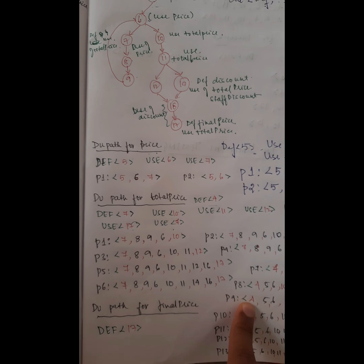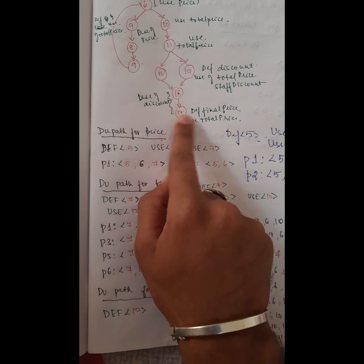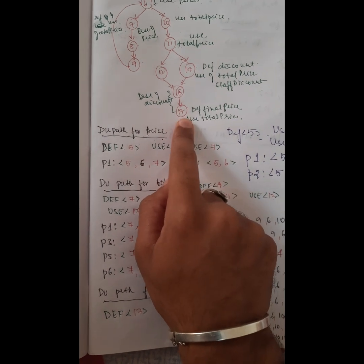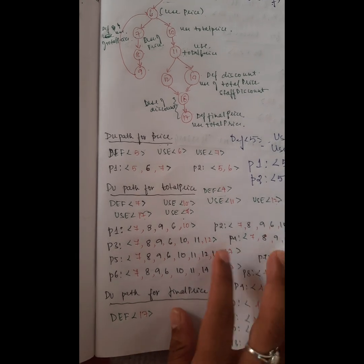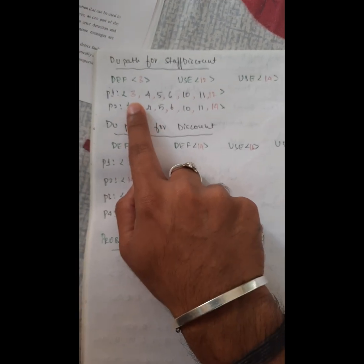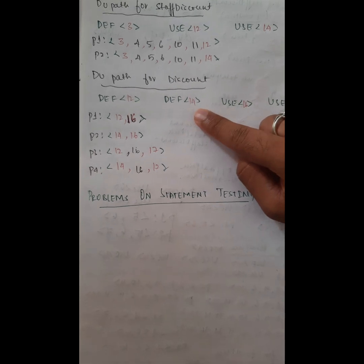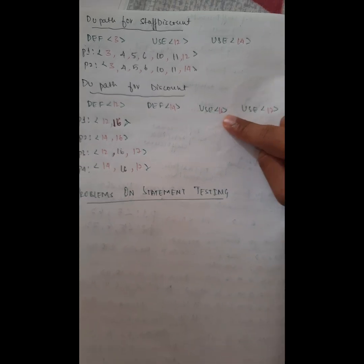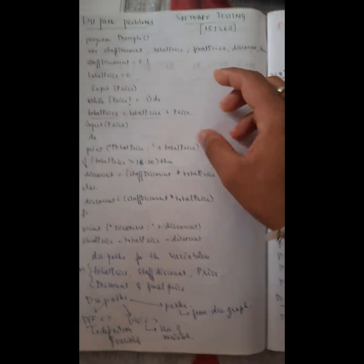For 'final price', it is defined at line 17 and there is no further use, so it has only one DU path, directly at 17. For 'staff discount', it is defined at line 3 and used at lines 12 and 14. For 'discount', it is defined at lines 12 and 14, and used at lines 16 and 17, giving 4 paths.